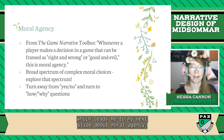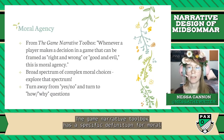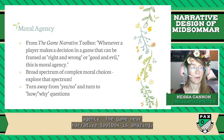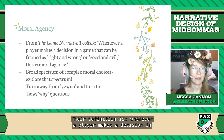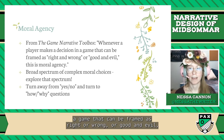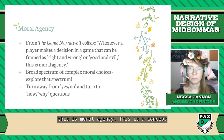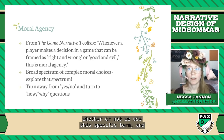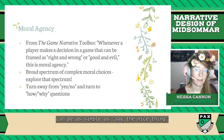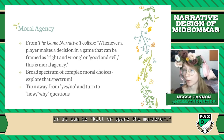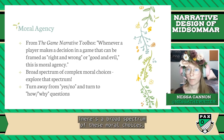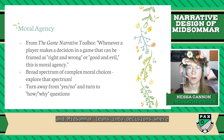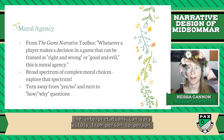The Game Narrative Toolbox has a specific definition for moral agency: whenever a player makes a decision in a game that can be framed as right or wrong, or good versus evil, this is moral agency. This is a concept all narrative designers and game writers know, and it can be as simple as 'say the nice thing or say the mean thing,' or it can be 'kill or spare the murderer.' Midsommar leans into decisions where the interpretations can vary wildly from person to person — some people were more empathetic towards Christian, while others believed Dani had a right to do what she did.